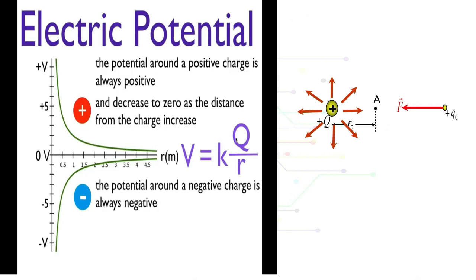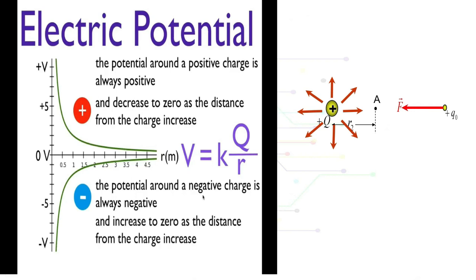By referring to the graph, we can see that the potential around a positive charge is always positive and decreases to zero as the distance from the charge increases. The potential around a negative charge is always negative and also decreases to zero as the distance from the charge increases.